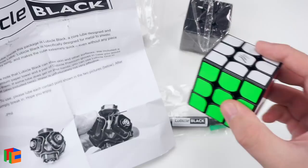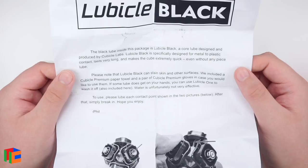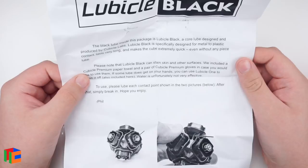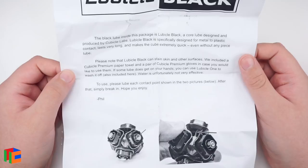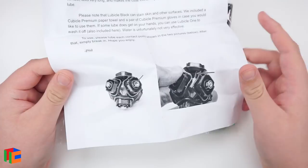These are the instructions. The black lube inside this package is Lubicle Black, a core lube designed and produced by Cubicle Labs. Lubicle Black is specifically designed for metal to plastic contact, lasts very long, and makes the cube extremely quick, even without any piece lube. Please note that Lubicle Black can stain skin and other surfaces. We included a Cubicle Premium paper towel and a pair of Cubicle Premium gloves. If some lube does get on your hands, you can use Lubicle 1 to wash it off. Water is unfortunately not very effective. To use, please lube each contact point shown in the two pictures below. After that, simply break in, hope you enjoy.